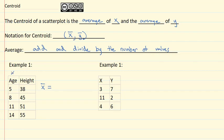To get the average x, we'll call the first column x, we're going to add them all together. 5 plus 8 plus 11 plus 14 is 38. And we'll take that 38 and we'll divide by the number of values. There's four values. And 38 divided by 4 comes out to 9.5. So the average x is 9.5.